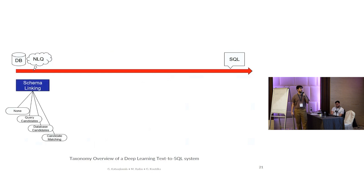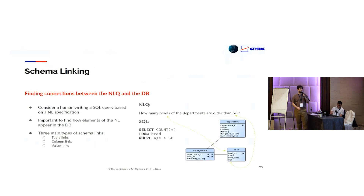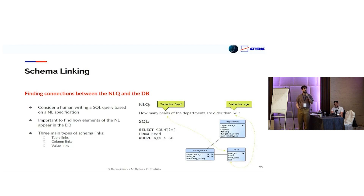We start with the database and the natural language question, and the first step is schema linking. To understand what schema linking is, we can imagine the way that a human expert would create an SQL query from a natural language question. One of the first things they would do is try to understand how the mentions in the natural language question relate to the database elements. For example, the word 'head' is referring to the table named 'head' — this is a table link. And the number 56 in the question refers to a value stored under a column named 'age' under the table 'head' — this is a value link. So we differentiate three types of schema links: table links, column links, and value links.